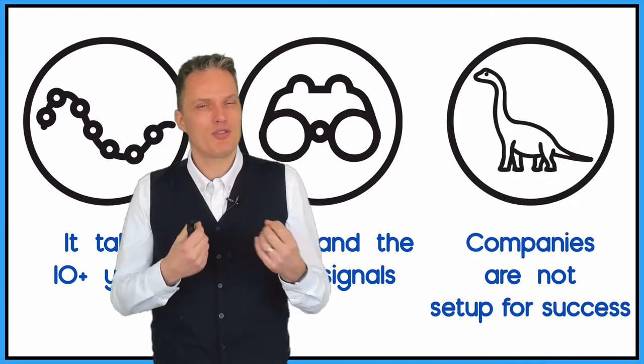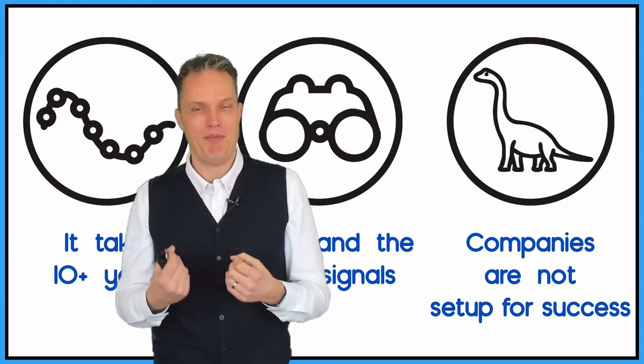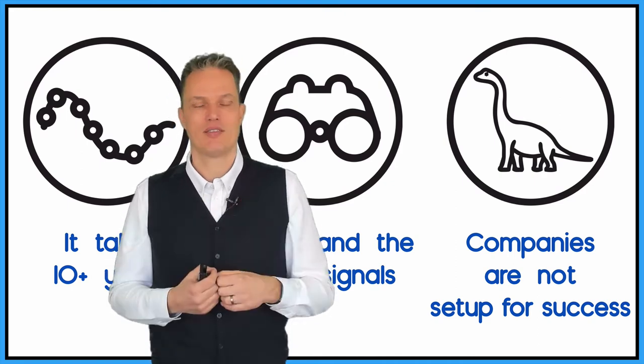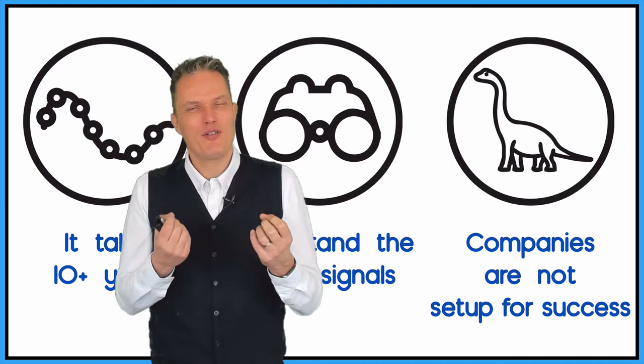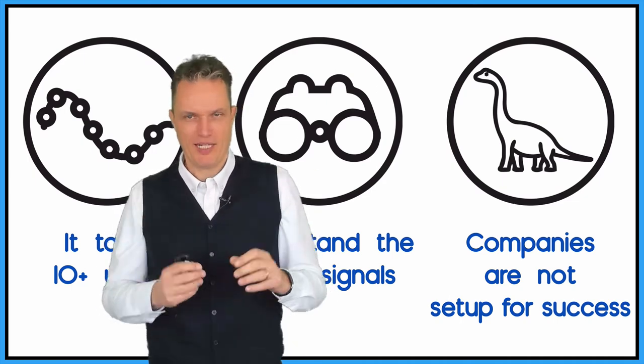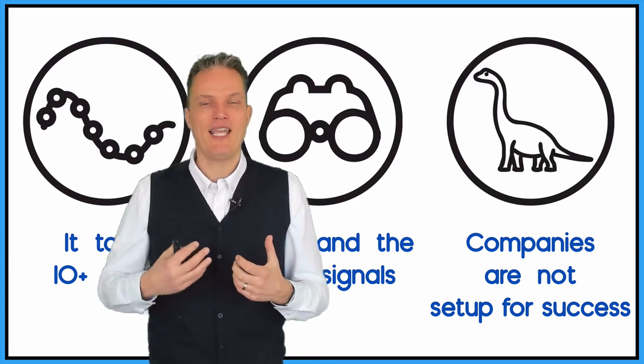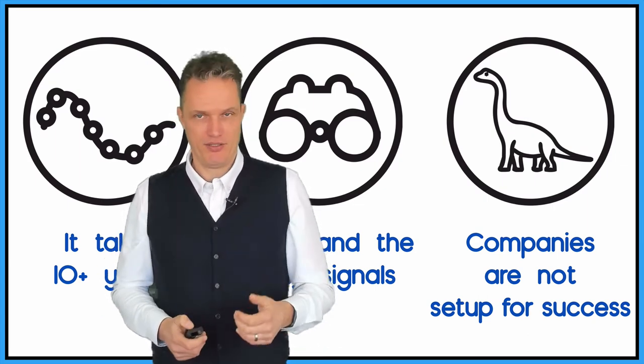Because most of the organizations, most of the companies are not set up for success. Of course, everybody knows about ambidexterity, about how to do innovation. But companies are locked in in a legacy business model. They don't have the organizational, architectural capabilities to do this transformation, to really implement these new business models and combining it with existing ones.